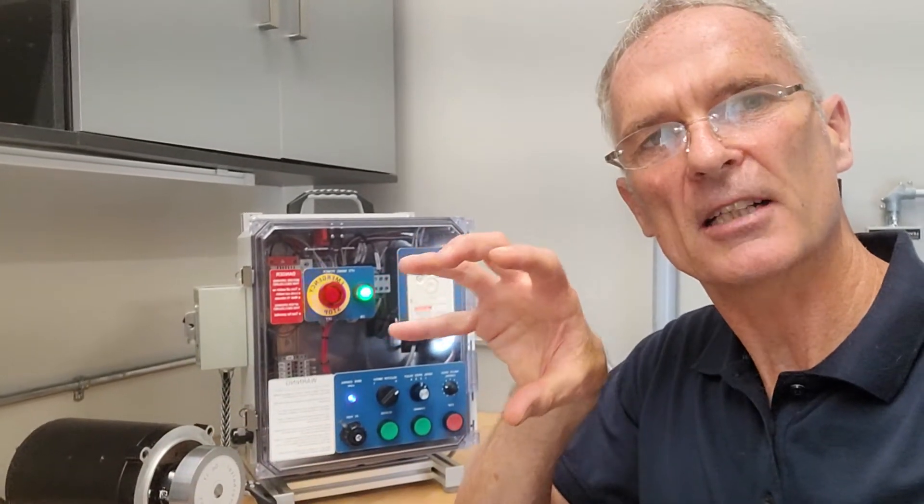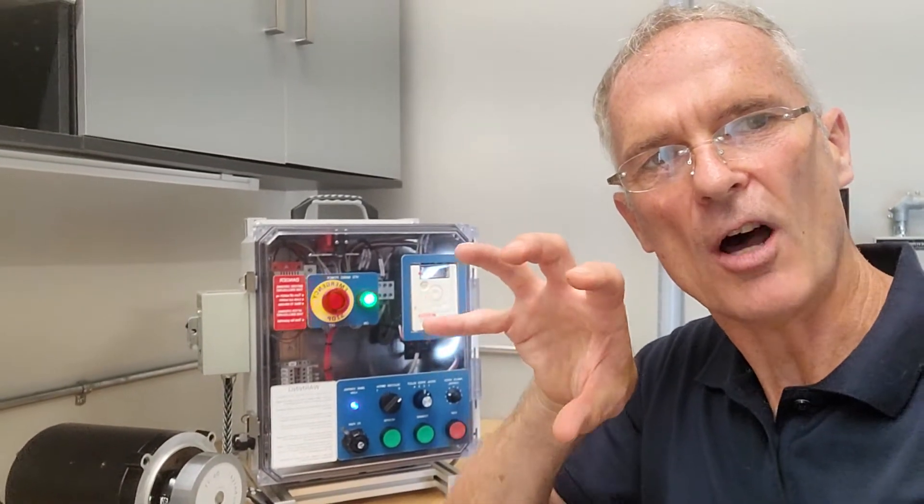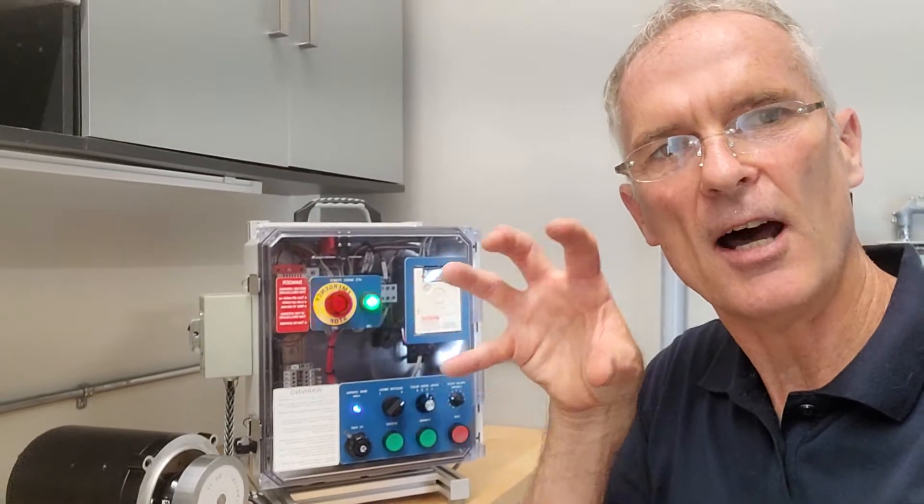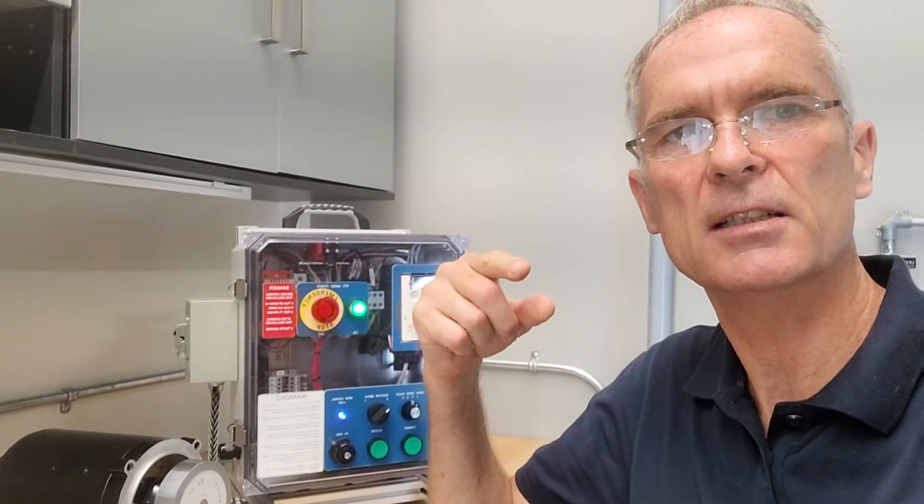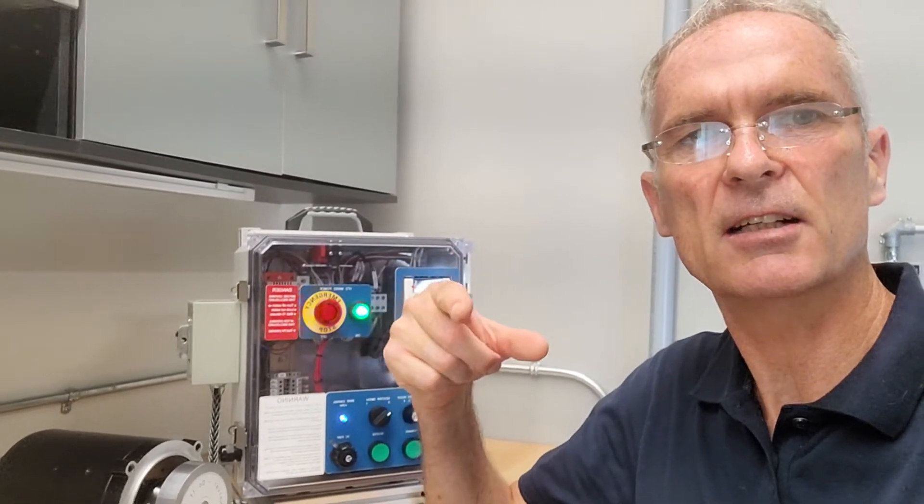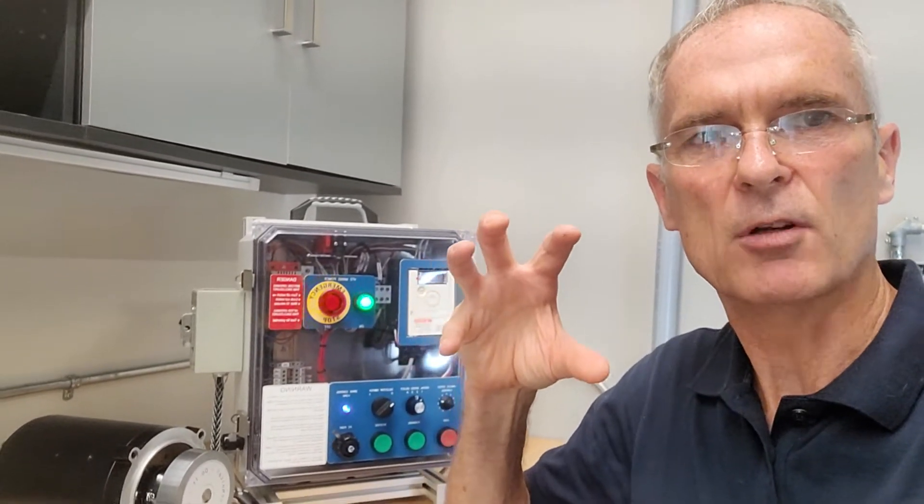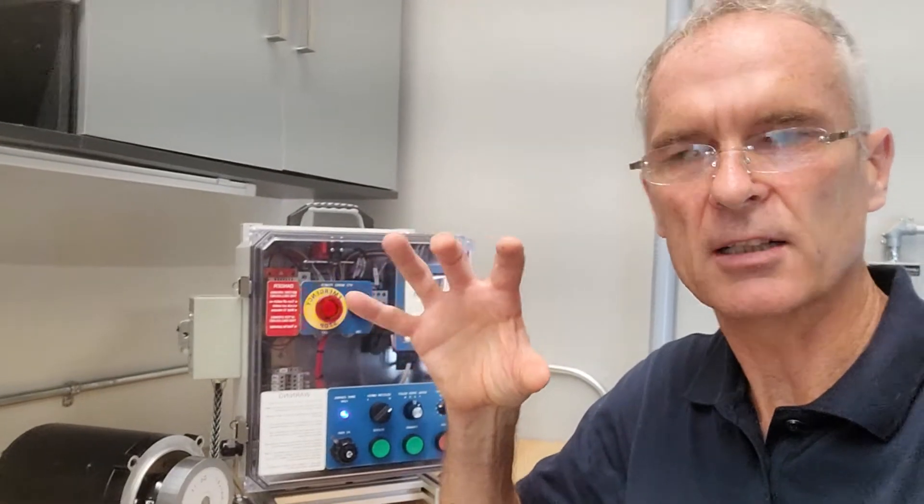The rotor field is opposite to the applied field and it locks up in that field. So if you've got a rotor that's spinning very quickly and you inject DC in there to stop it, it will brake dynamically. It will brake very quickly.